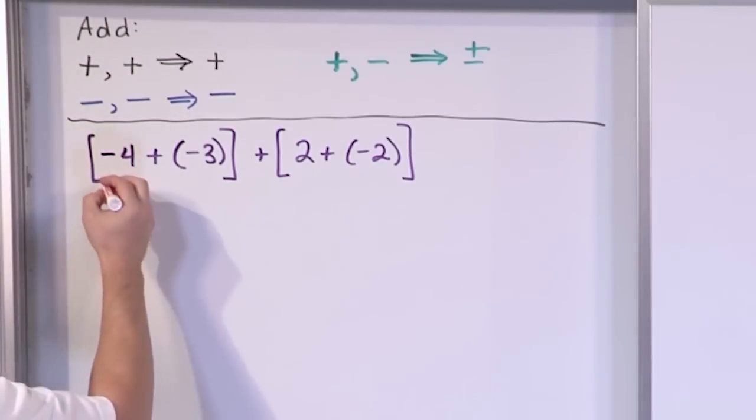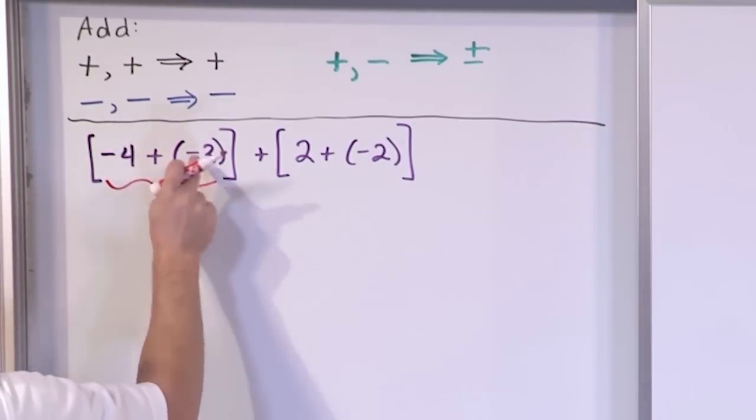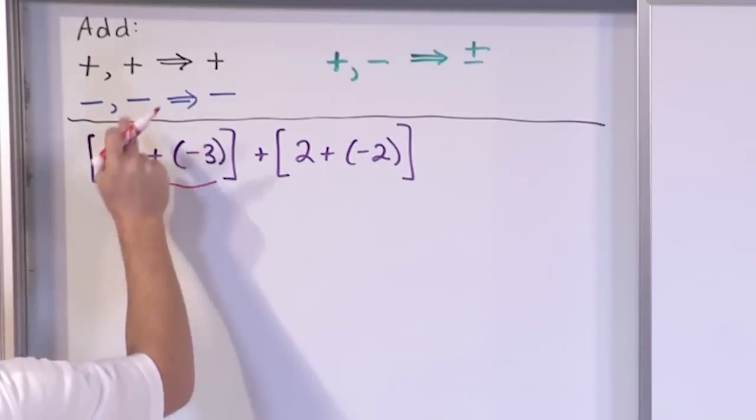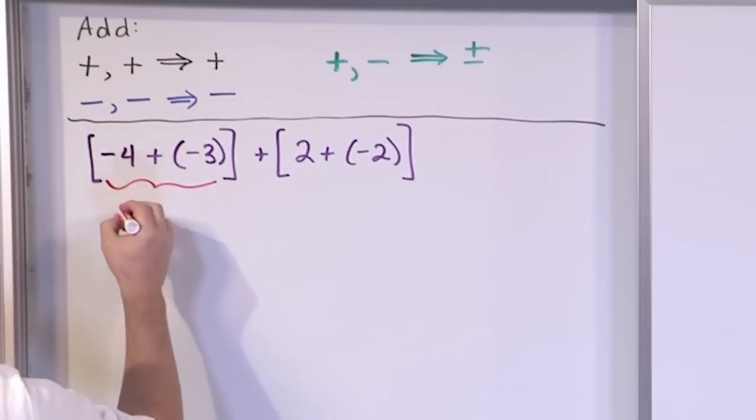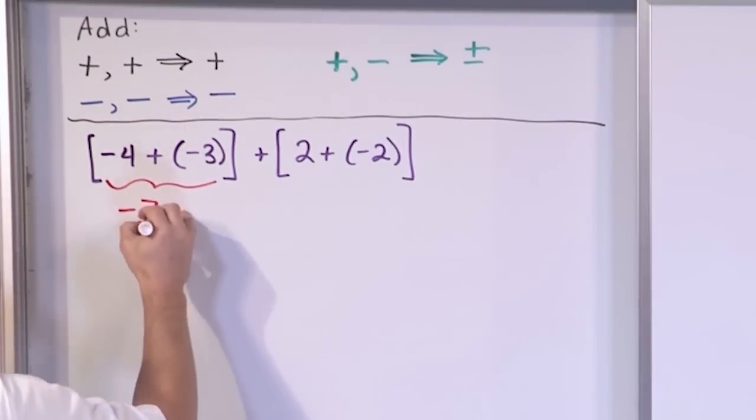So first we look at this guy, and we realize negative 4 plus negative 3. We're adding things together with the same sign, and that sign's negative. So the answer is always going to be negative. And the way we get it is by adding the absolute values. 4 plus 3 is 7, so inside here we have negative 7.